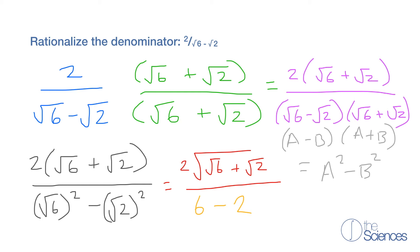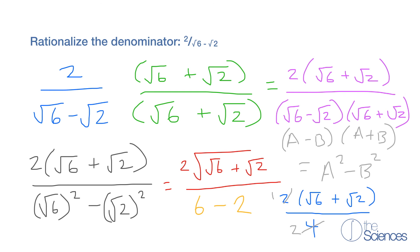So now what we have is 2 times the square root of 6 plus the square root of 2, over 6 minus 2, which is 4. We can cancel the 2 in the numerator — 2 divided by 2 is 1 — and cancel in the denominator — 4 divided by 2 is 2. So our answer is the square root of 6 plus the square root of 2, divided by 2.